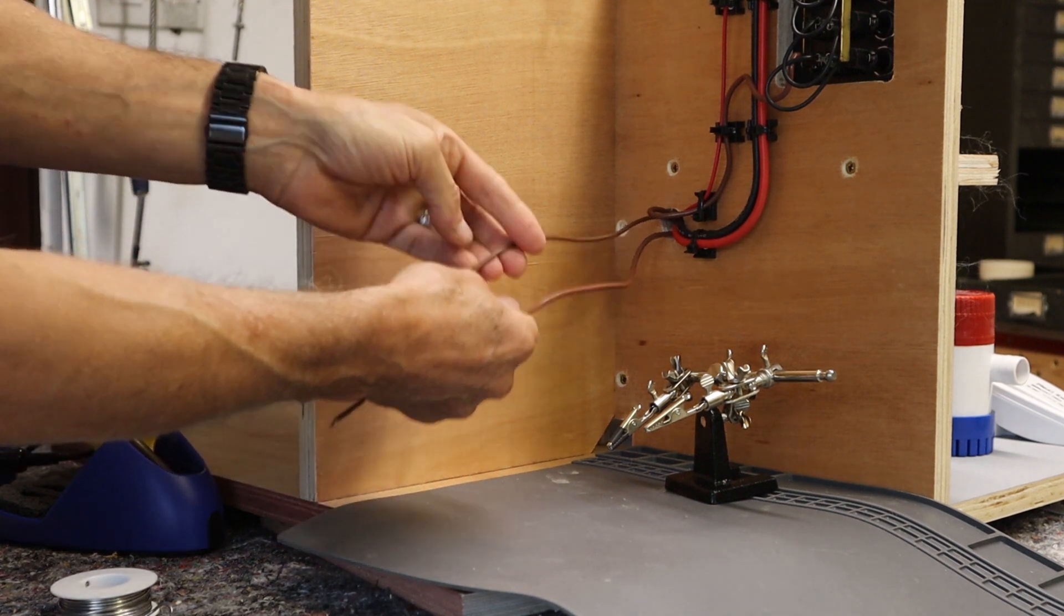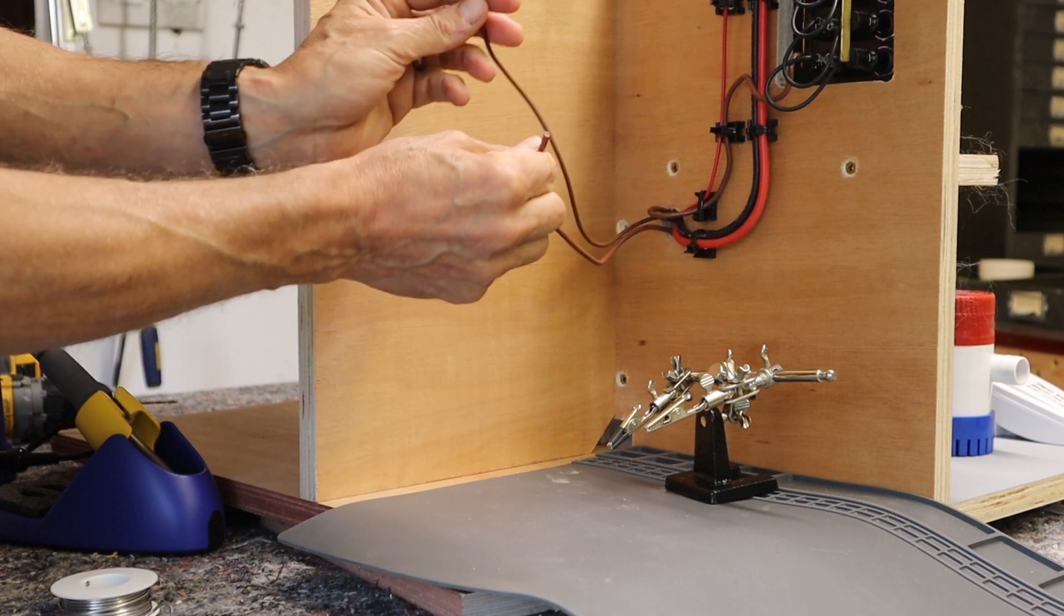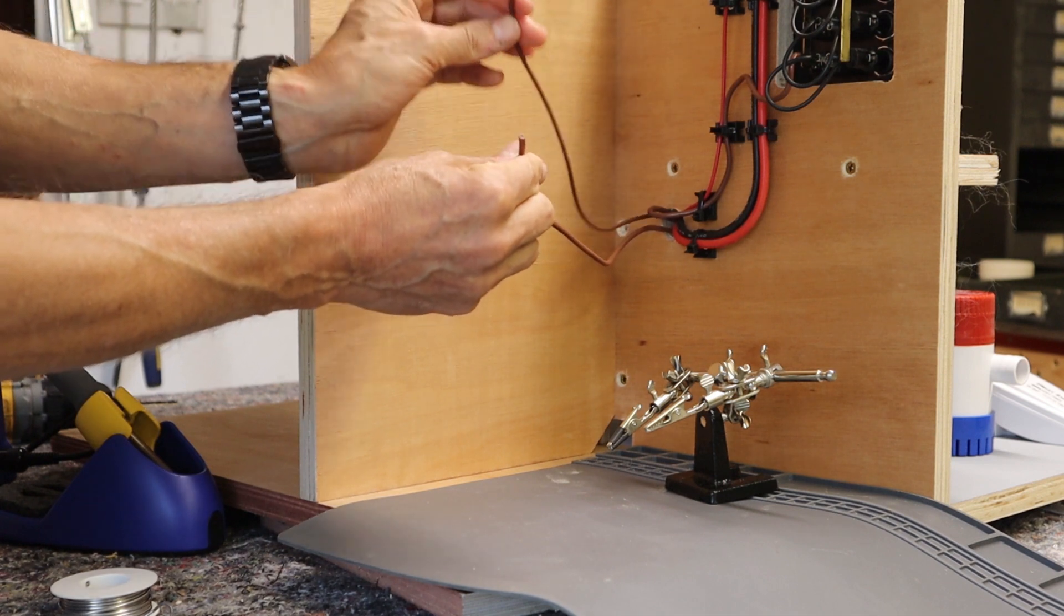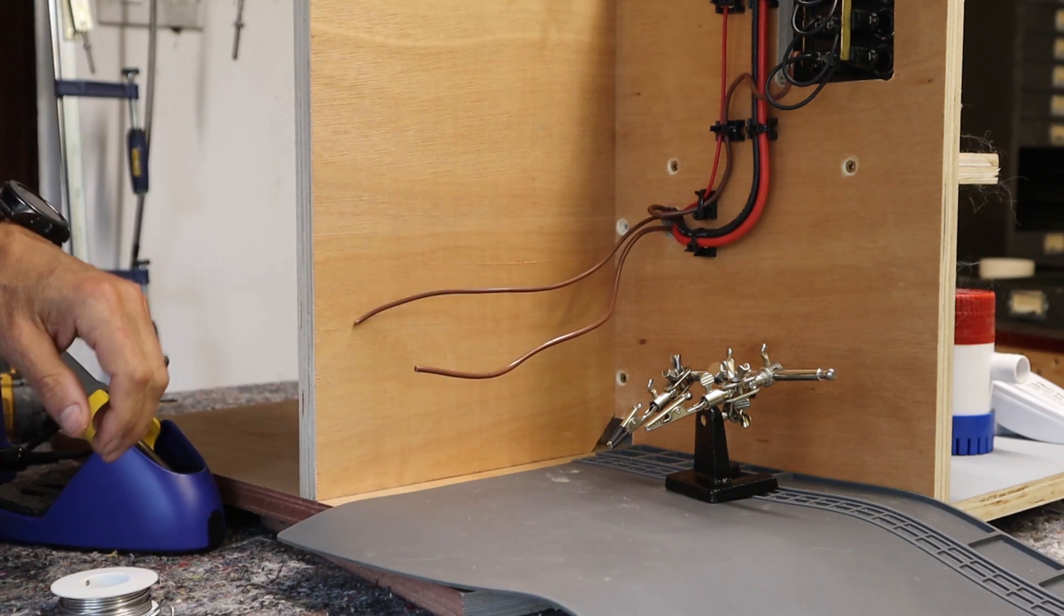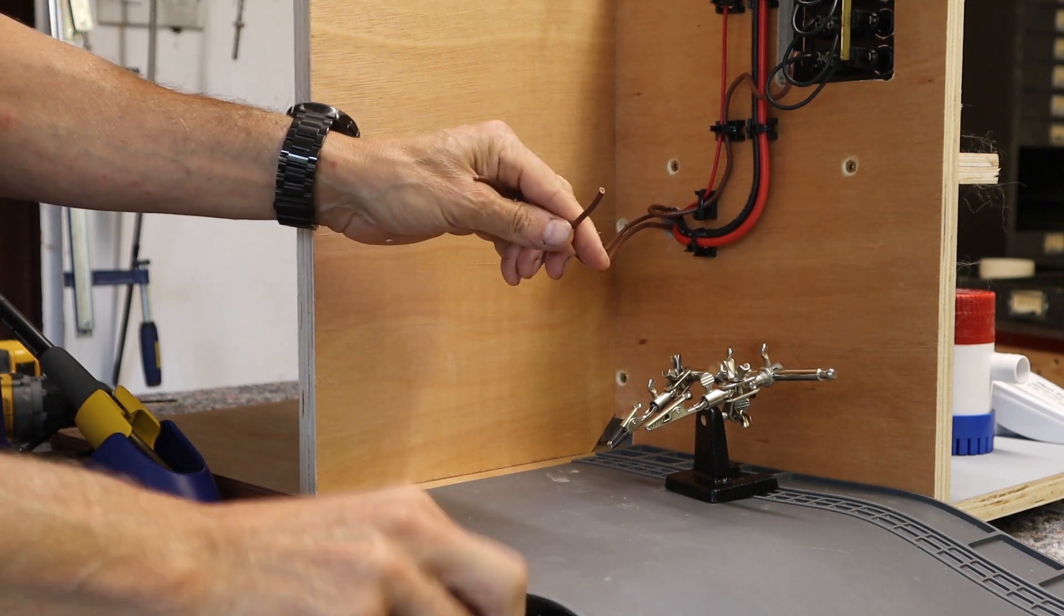So the only other thing I've got to do is connect the other wire from the float switch to the positive to power the pump. Now I'm going to strip these wires and solder them together and heat shrink over them.